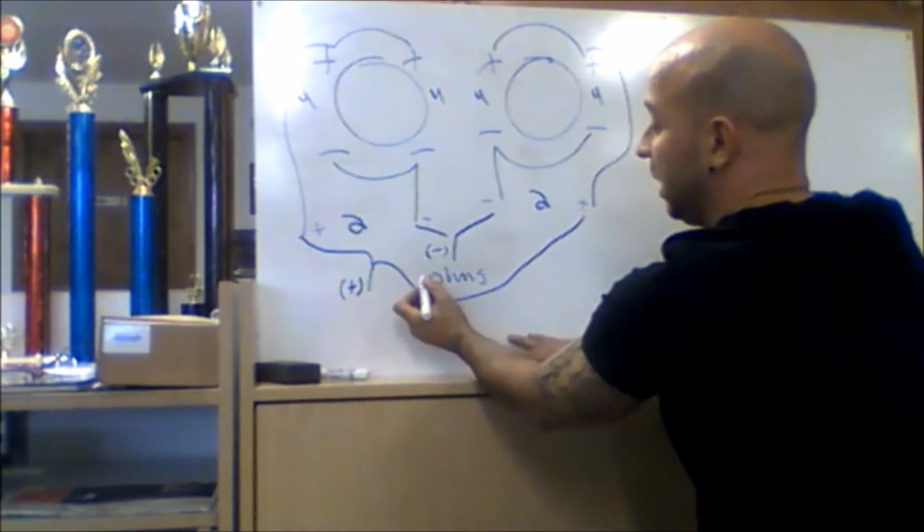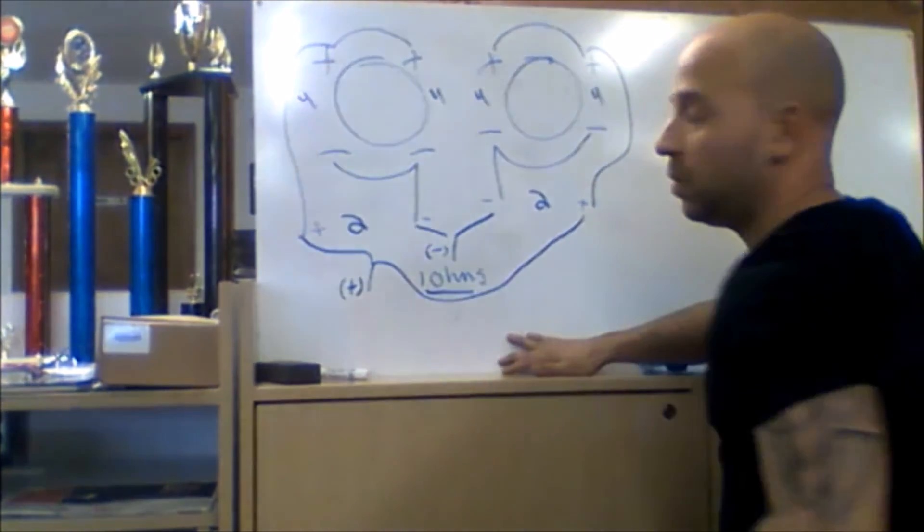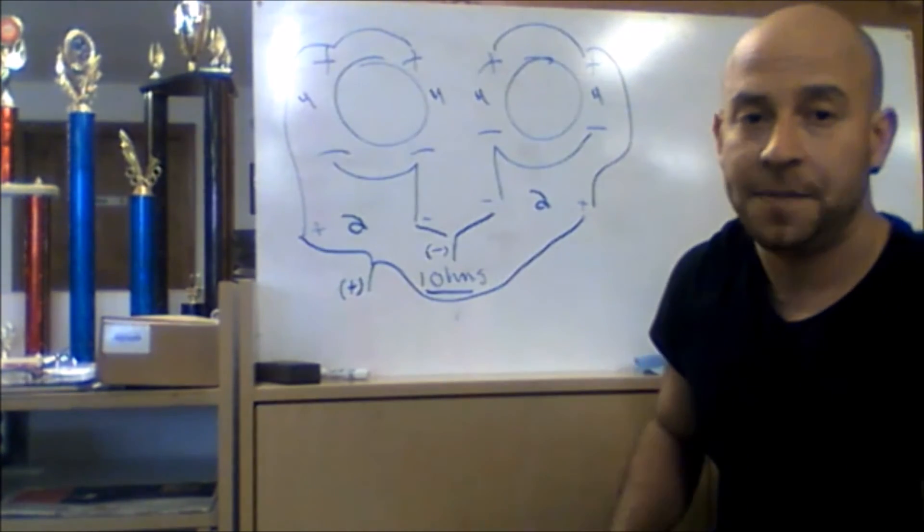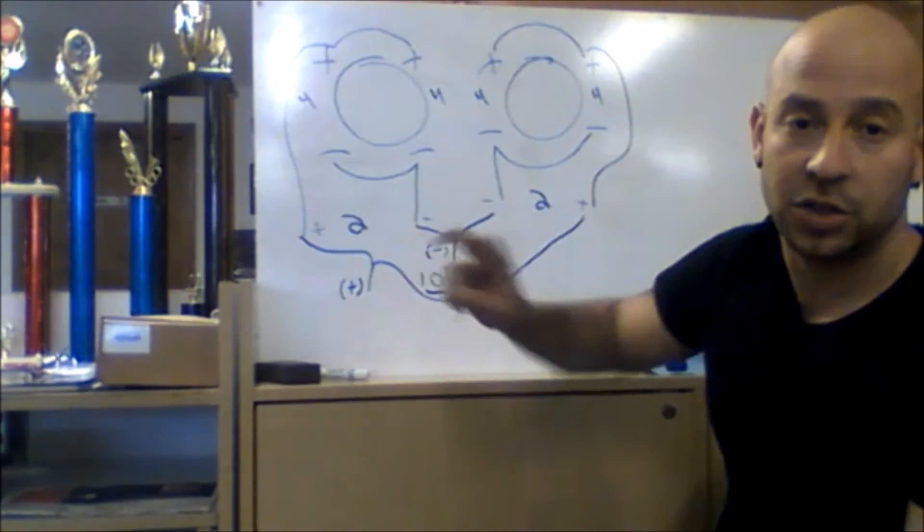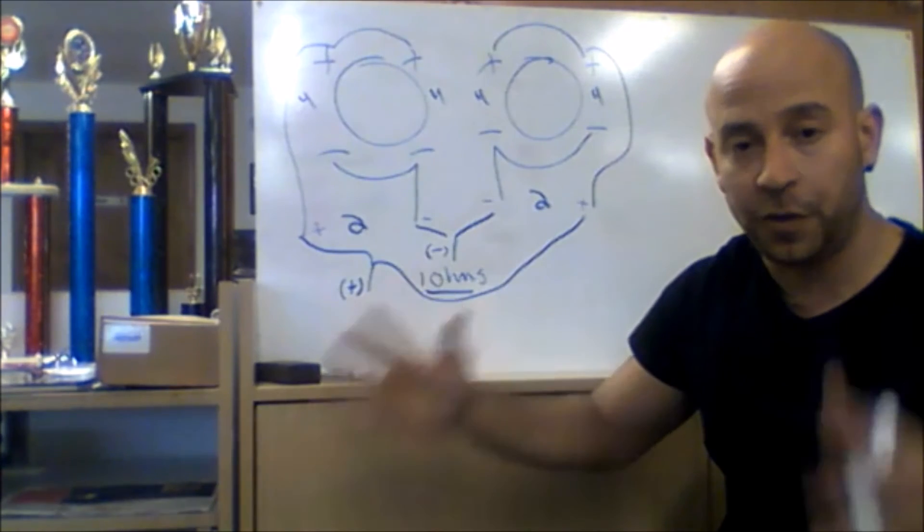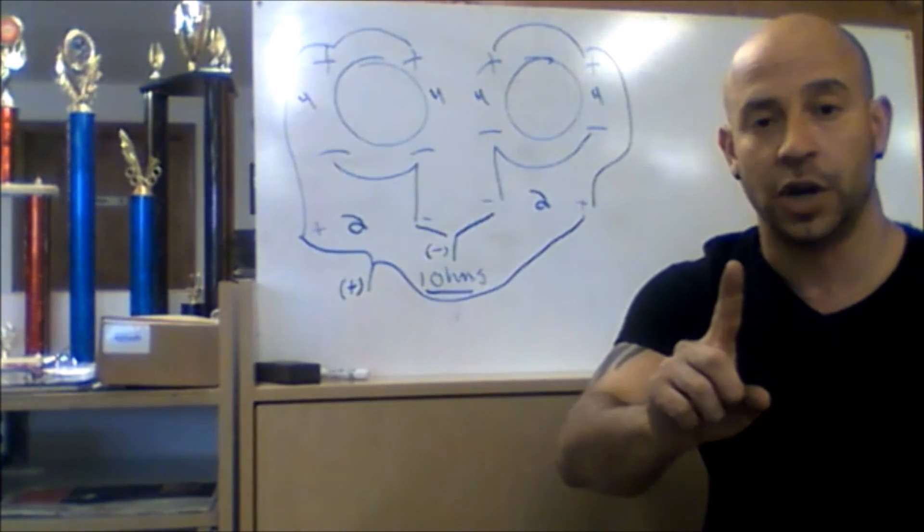This leaves you with an end load of one ohm. So this is how you wire two subs that are dual four ohm down to one ohm.